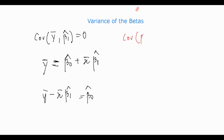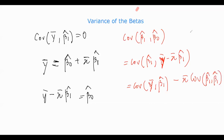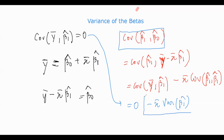Covariance of β̂₁ and β̂₀ is actually equal to the covariance of β̂₁ and (ȳ minus x̄·β̂₁). We get that the covariance with ȳ is zero, as we have already proved, minus x̄ times the variance of β̂₁. So covariance of β̂₁ and β̂₀ equals minus x̄ times variance of β̂₁.